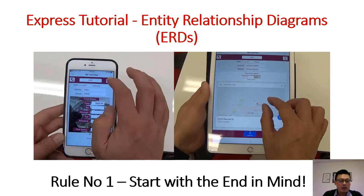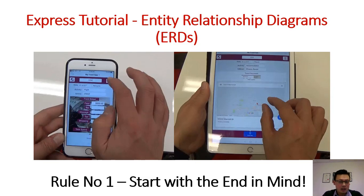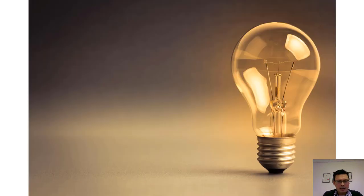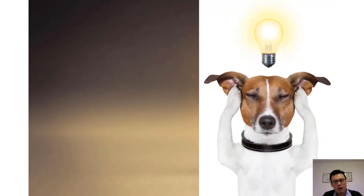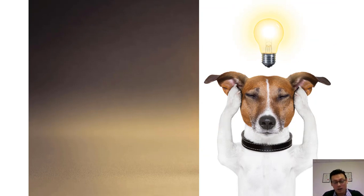Rule number one is to start with the end in mind — understand what you're trying to finish up with, because it is really important. Otherwise you can potentially create a bit of a mess for yourself. You might have a great idea, and what we want to make sure is it doesn't turn into a dog of an idea. If you don't plan appropriately, the chances of it becoming a dog of an idea becomes higher.